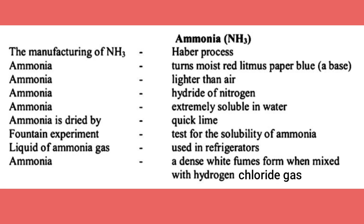Ammonia gas has the formula NH3. It is manufactured by the Haber process.